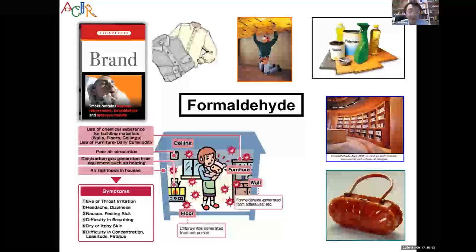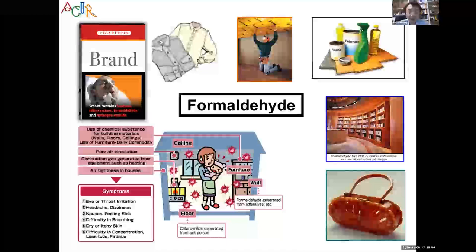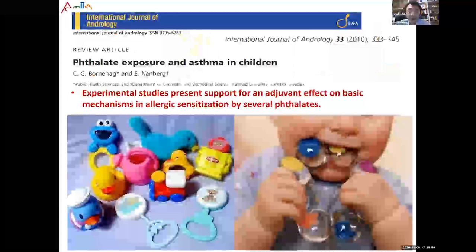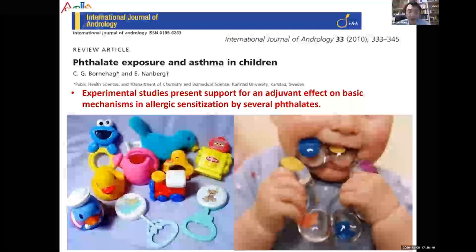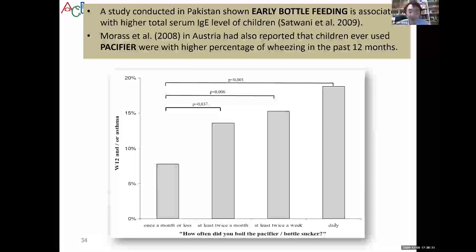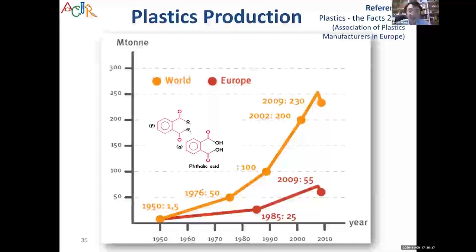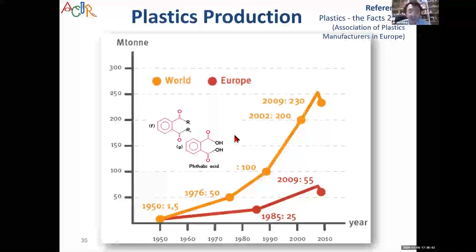Another important indoor air pollutant is formaldehyde from furniture, which damages bronchial epithelial cells and increases susceptibility to asthma. We also found that plasticizers are an issue — many plastic utensils contain phthalates, and phthalate exposure definitely increases asthma in children. One study showed that burning infant milk bottles or using pacifiers made of plastic increases the incidence of asthma.